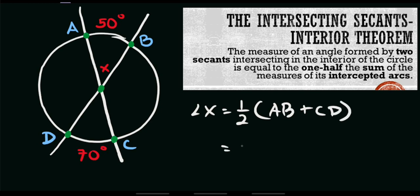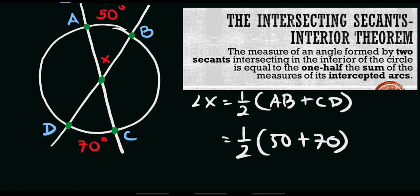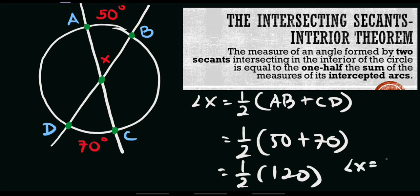Substituting the values: x equals one half of 50 degrees plus 70 degrees. Simplifying, we have one half of 120, which equals 60 degrees. Therefore, angle x is equal to 60 degrees, and that is our final answer.